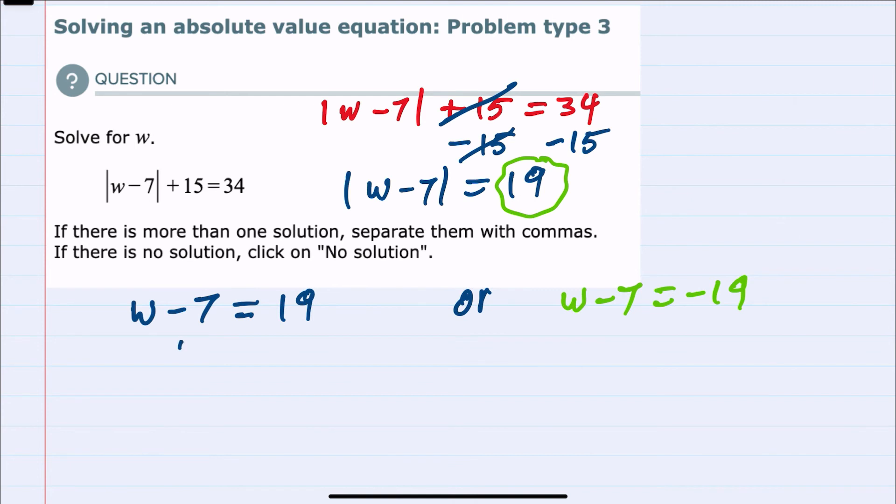On the left-hand side, adding the 7 to both sides isolates the W and gives us a 26.